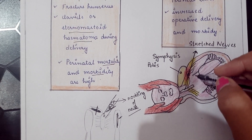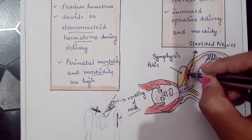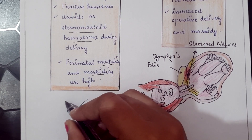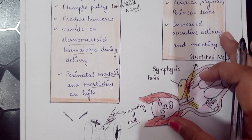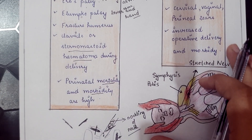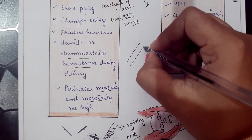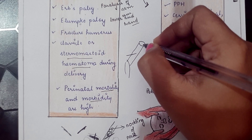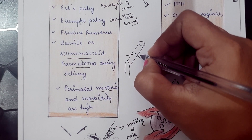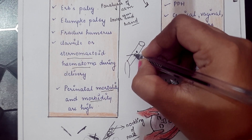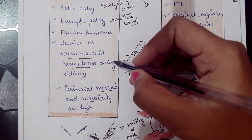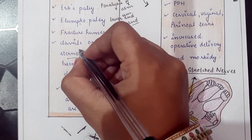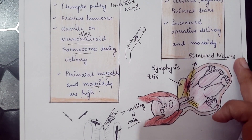Fracture of the humerus or clavicle may occur during delivery in shoulder dystocia. The humerus is the long bone of the upper arm, and the clavicle is the collar bone, also known as the beauty bone. Sternocleidomastoid hematoma occurs when tiny capillaries in the sternocleidomastoid muscle — which connects the sternum, clavicle, and mastoid process of the temporal bone — leak or tear, causing blood to accumulate within the muscle.